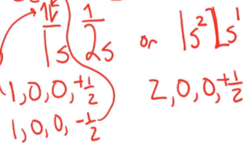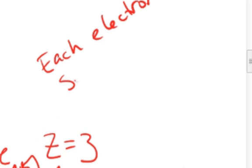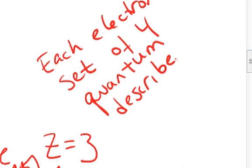So those are the three sets of four quantum numbers that would describe the three individual electrons. Again, each electron requires a set of four quantum numbers, unique quantum numbers, to describe its energy and location, probable location, to describe it fully.